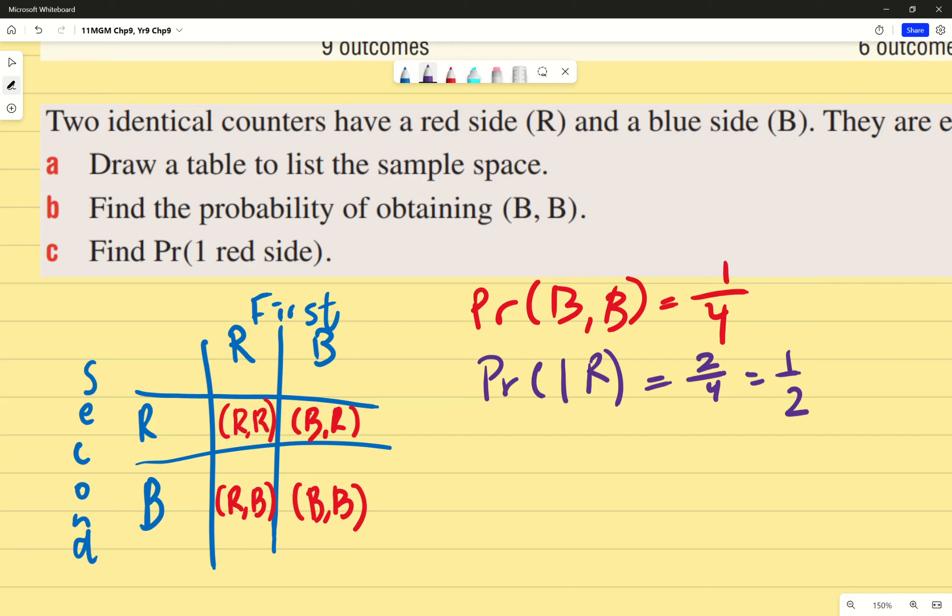Inherently, the probability will change. So make sure you're identifying what the question is asking. If the question says, for example, that you're taking letters out of a Scrabble bag, make sure you identify whether it says it's putting it back or not. Because if it's not putting it back, the probability will change and you can't repeat. Any questions?